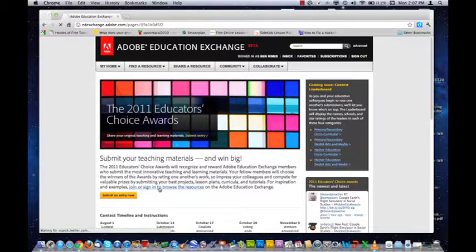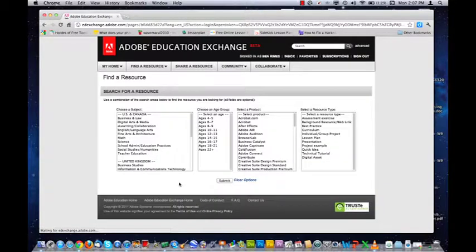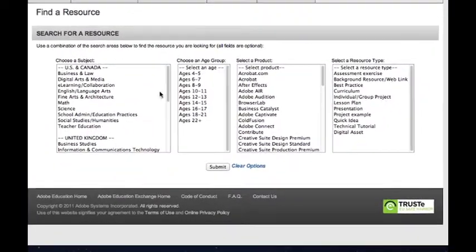So I'm going to click here. It says join or sign in to browse the resources. And I'm going to go ahead and click on that. And I've already signed in to save you the trouble of having to watch that. And here I go. I can go ahead and use any of the search criteria here.